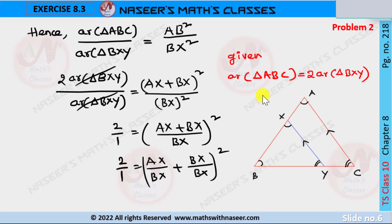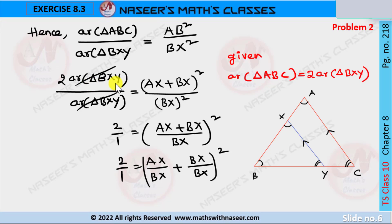From the given data, we can write area of triangle ABC is equal to 2 times the area of triangle BXY, because XY divides triangle ABC into 2 equal area parts. So we replace area of triangle ABC as 2 times area of triangle BXY. Here, area of triangle BXY cancels, and in LHS we can write 2 by 1.